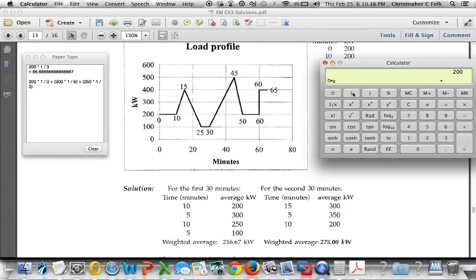Again, a parenthesis. 100 times 1 divided by 6. Close the parenthesis and hit equals. And we have 216.67, just like we see here in the textbook. You guys can rewind this and do this again.